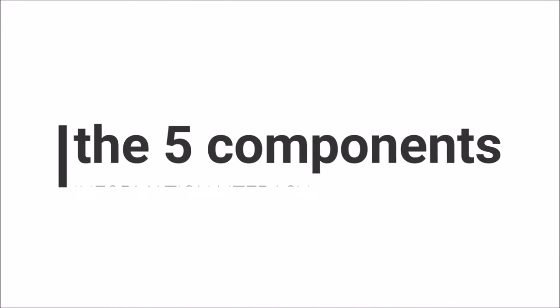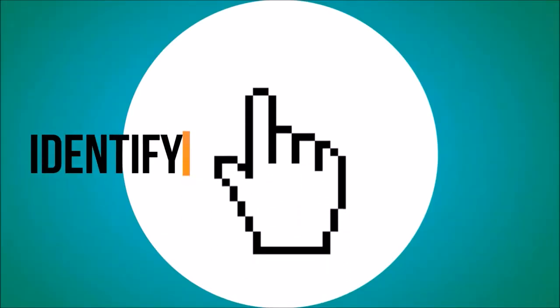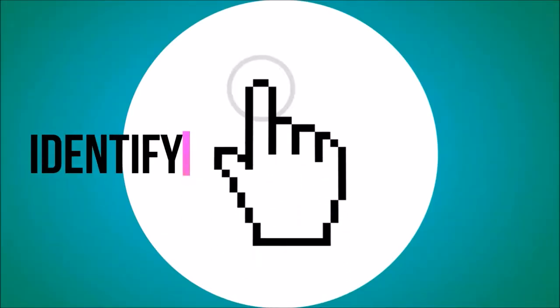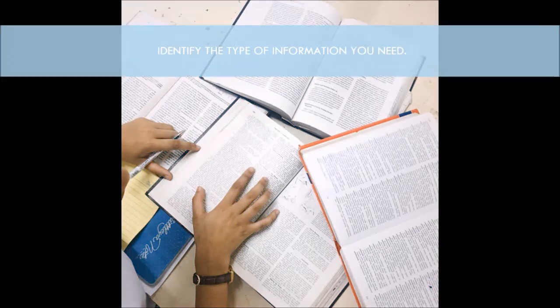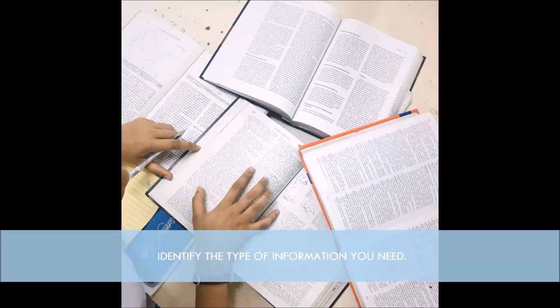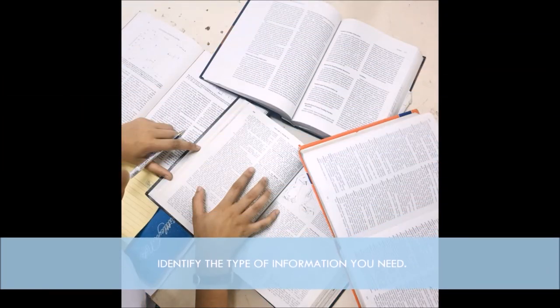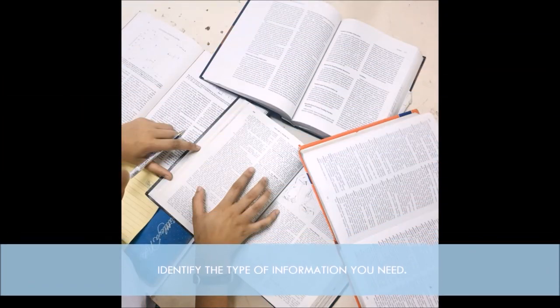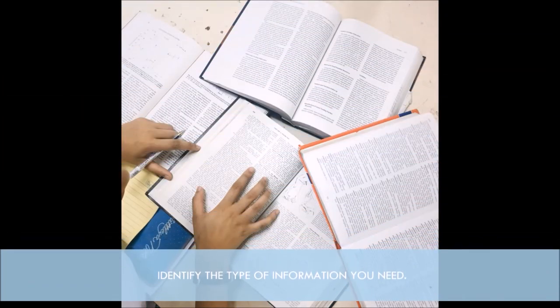The five components needed to be followed to become an information-literate individual. First is to identify the type of information you need.